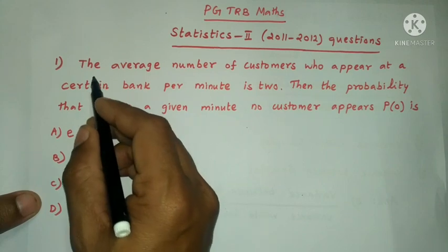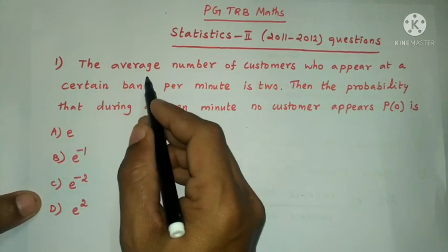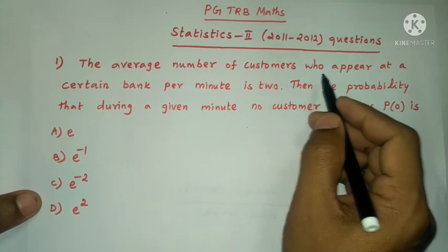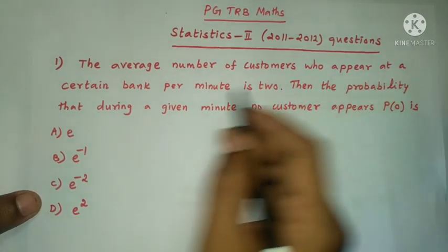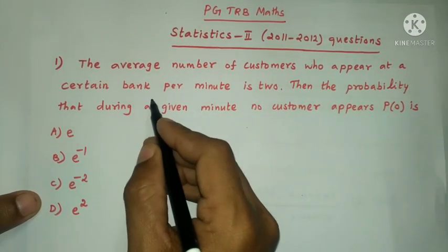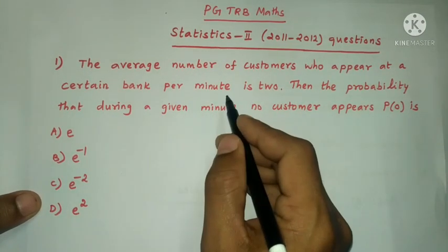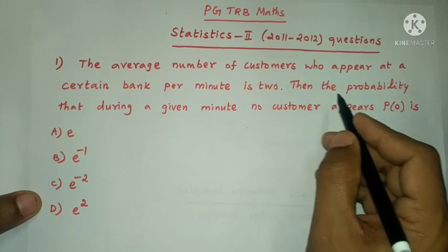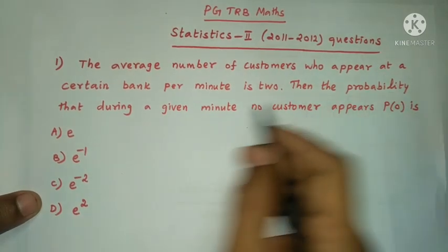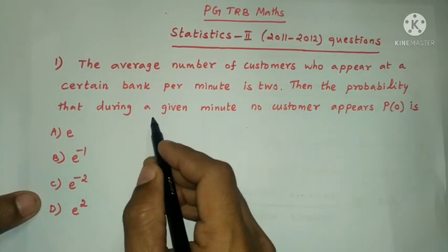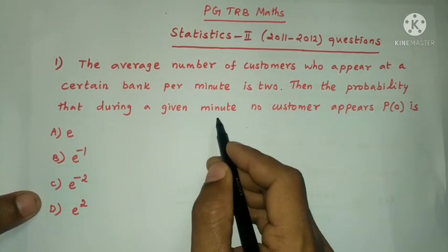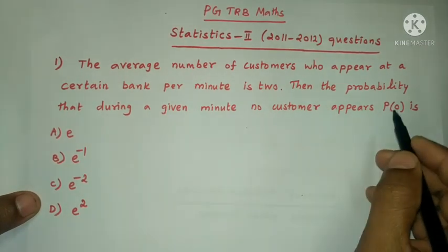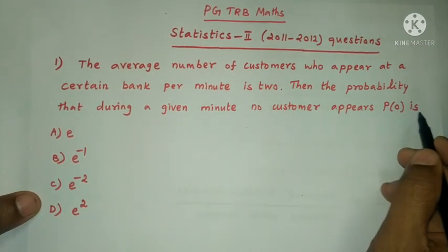First question: the average number of customers who appear at a certain bank per minute is 2. Then the probability that during a given minute no customer appears, that is P of 0, is?